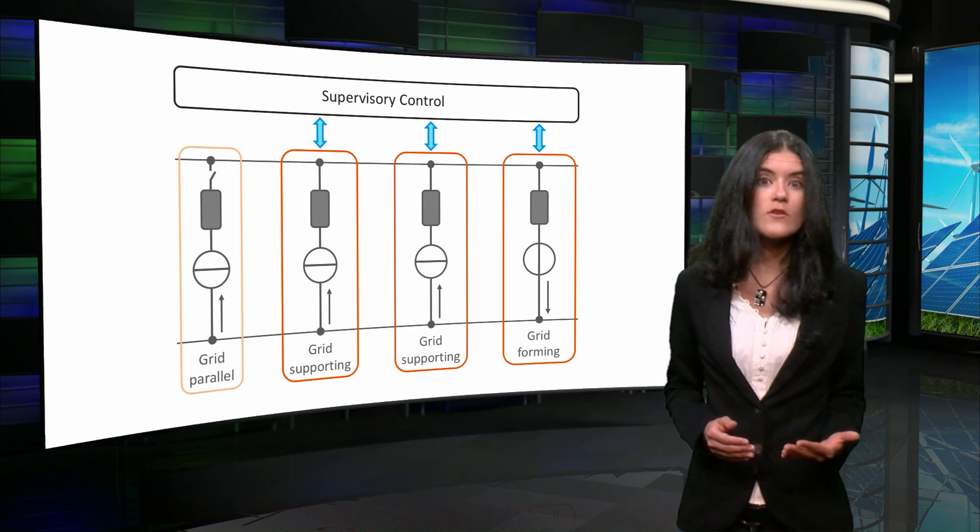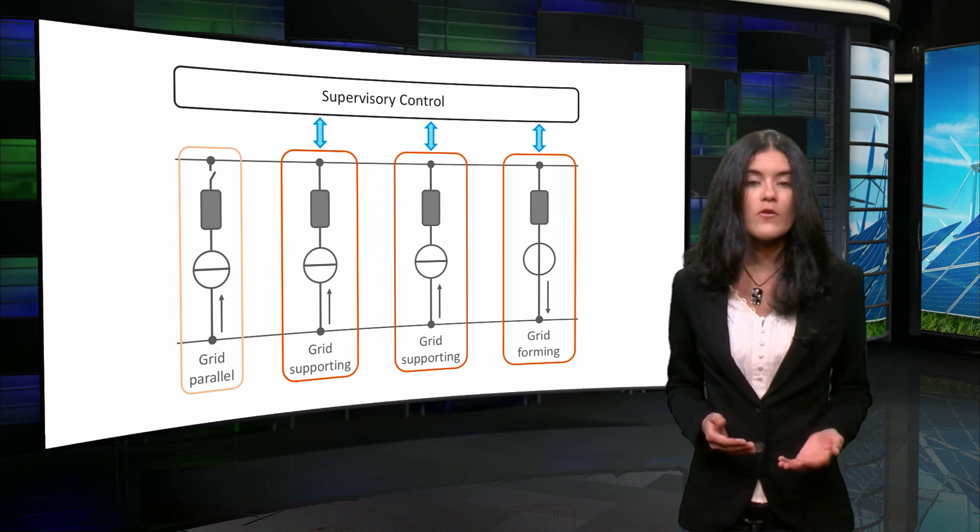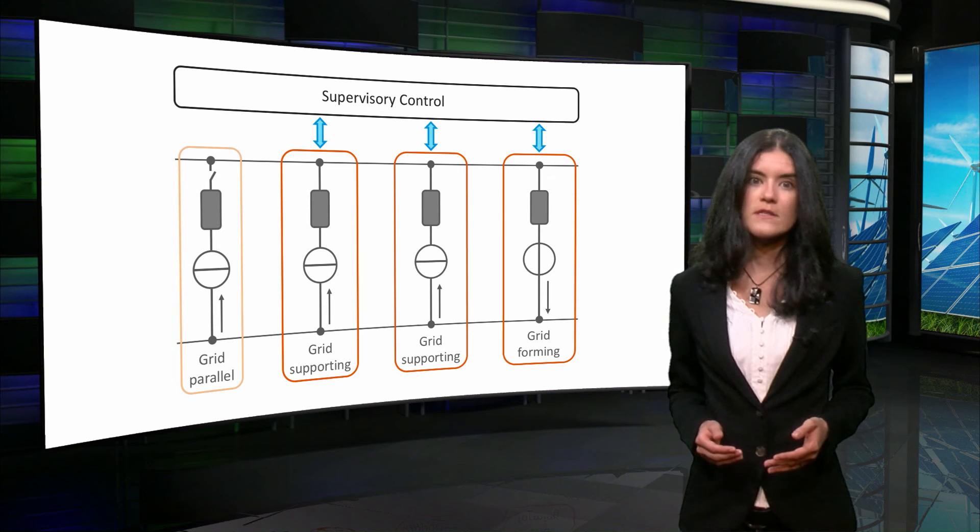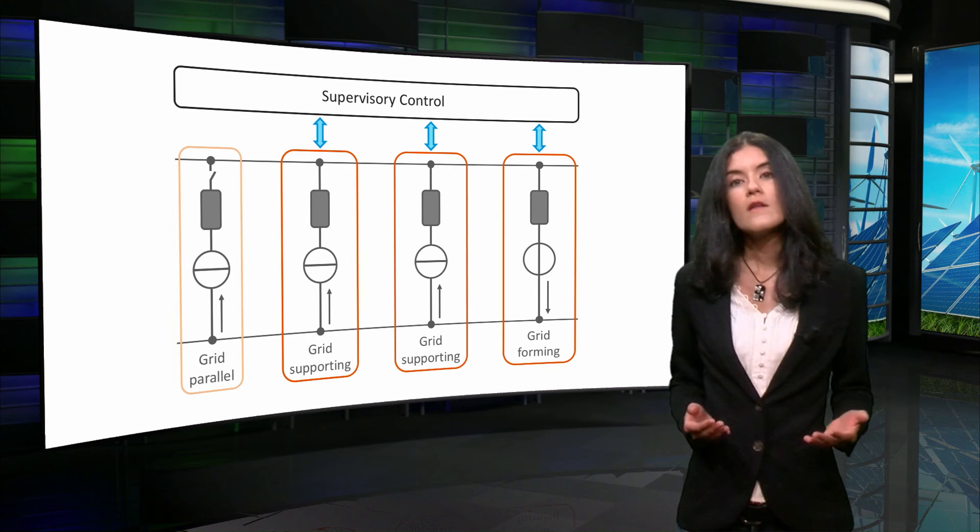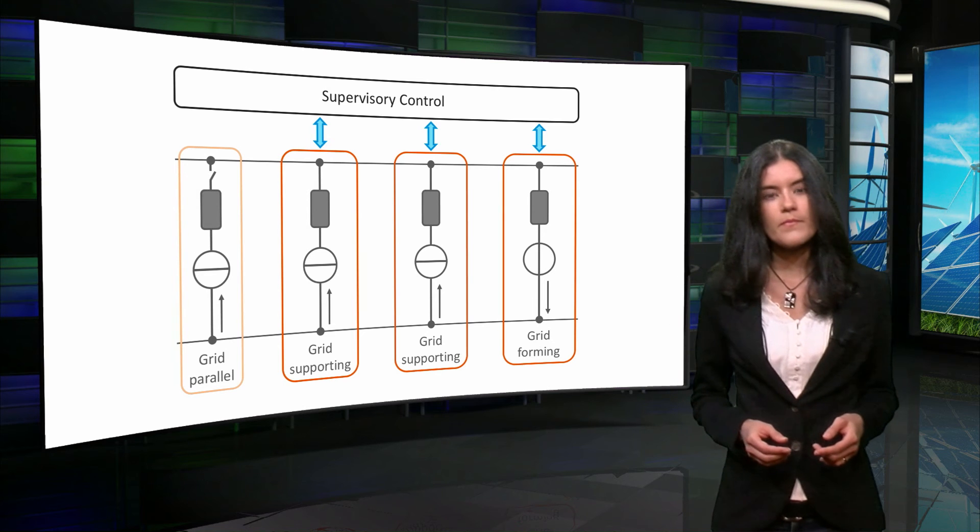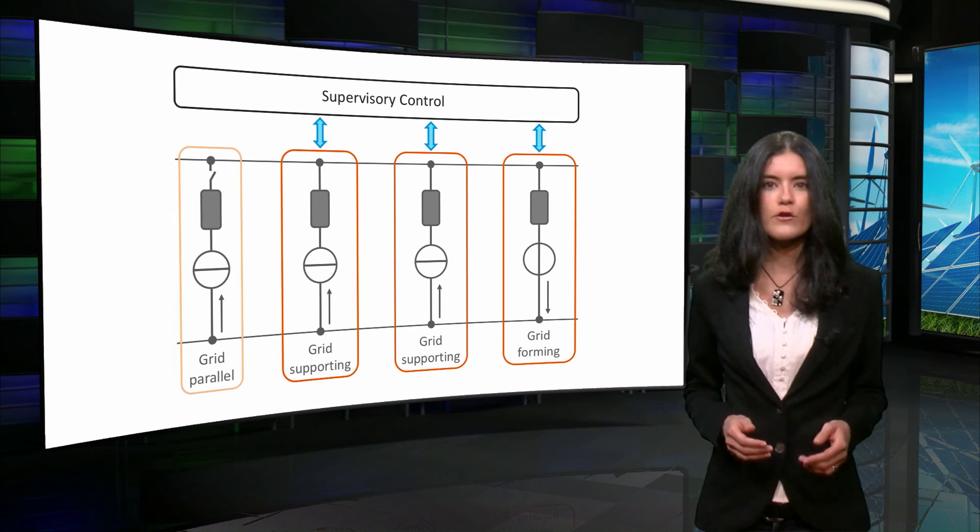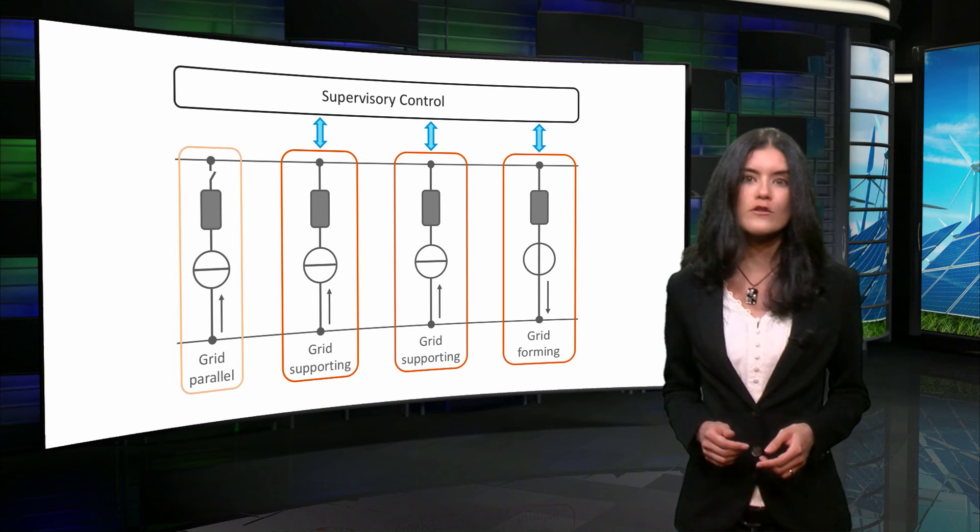one converter, known as master converter or grid-forming converter, regulates the voltage and defines the current references for other converters, known as slaves. The master converter operates as a voltage source inverter and the slaves as current source inverters.